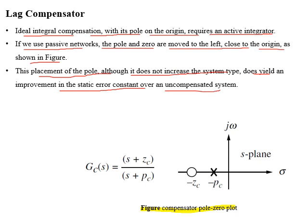If we use active networks, we can place a pole at the origin, through which we can improve the type of the system and hence have zero steady-state error. But using passive networks, we cannot place a pole exactly at the origin; instead it is placed near to the origin, and steady-state error is improved with respect to that of the uncompensated one.